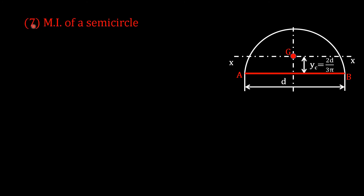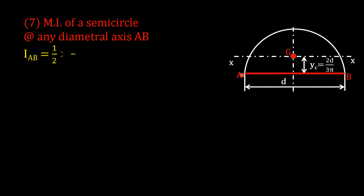Number seven: moment of inertia of a semicircle about any diametral axis AB is half of πd⁴/64, which equals πd⁴/128.